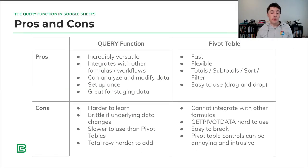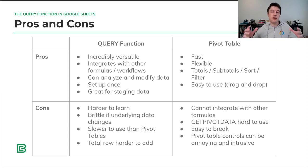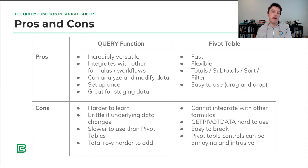What about the pros and cons? We'll jump into a Google Sheet in just a moment, but let's talk about them briefly first. The query function is incredibly versatile and incredibly powerful. It can do much more than a pivot table can because it can work on your data, not just aggregating. A pivot table is all about aggregating the data, rolling it up, filtering and sorting. But the query function can also transform, modify, and change the data itself — you don't have to aggregate it.